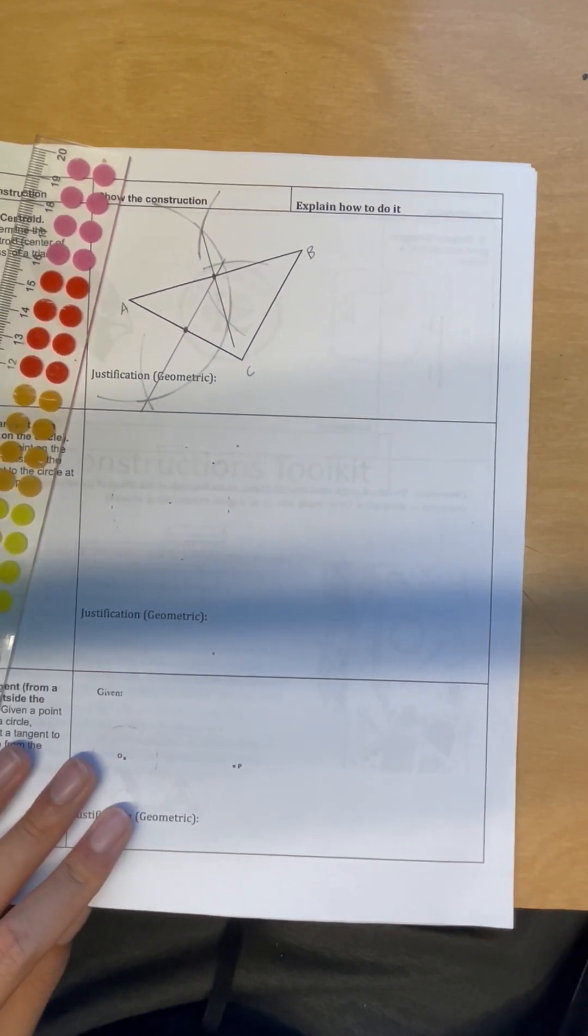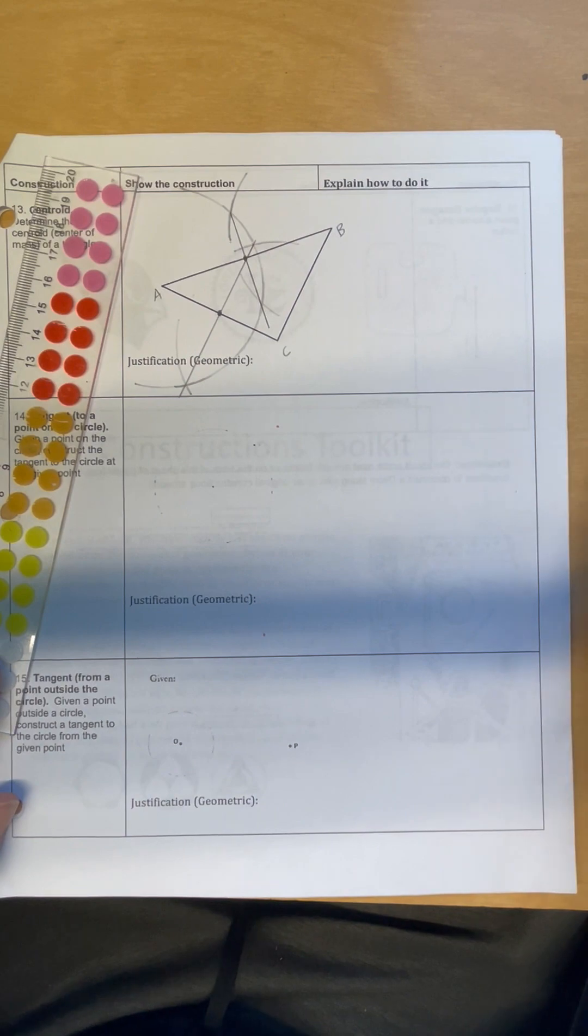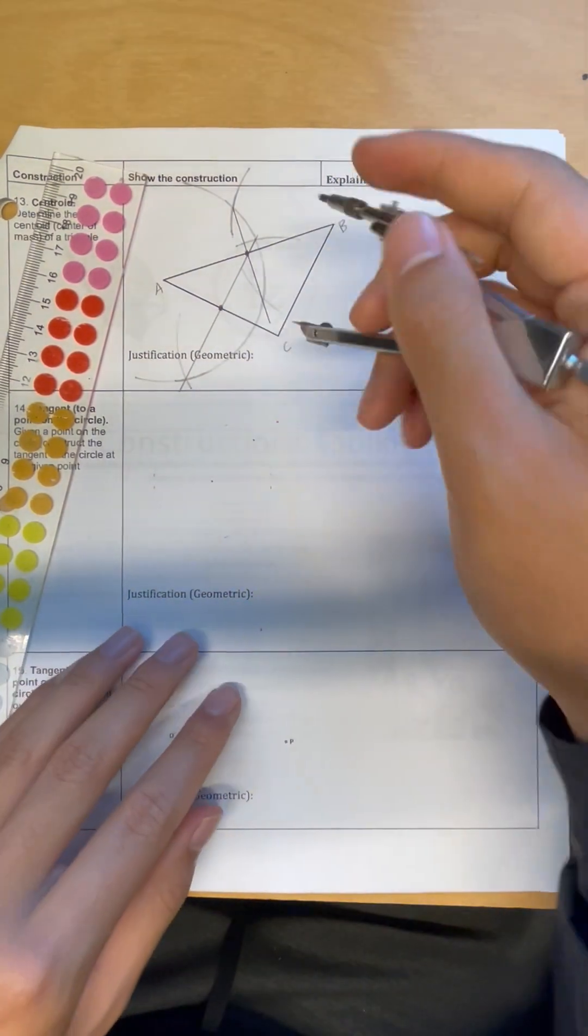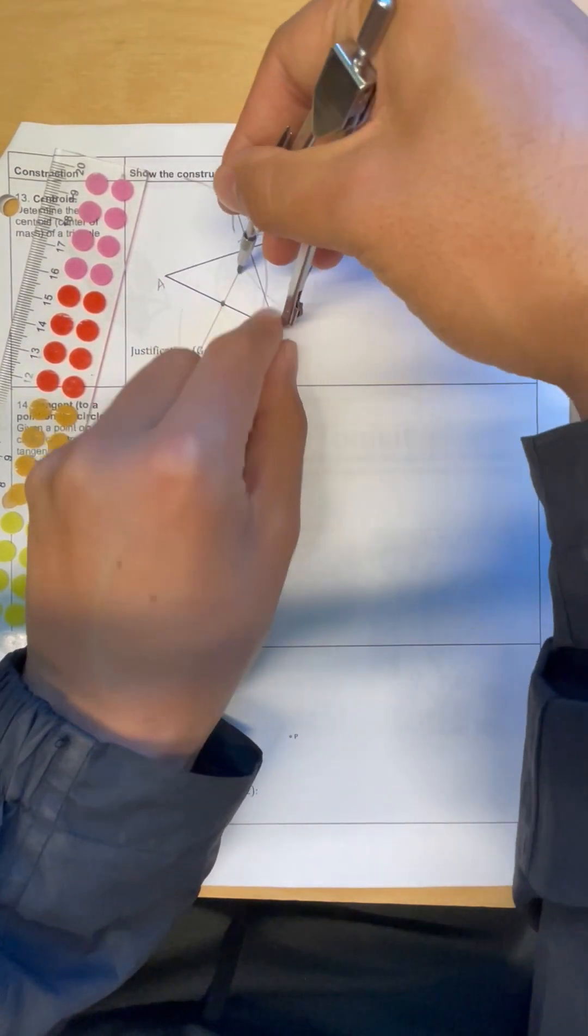And now, just like with all of the other constructions, inscribing the circle and circumscribing the circle, you only technically need two of the medians, but we'll show that the third one should intersect in roughly the same spot as well, so we'll perpendicularly bisect BC as well.